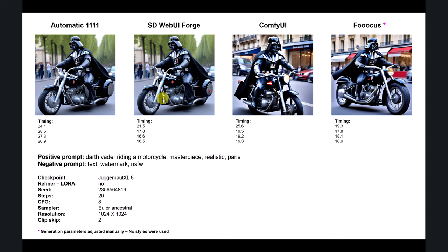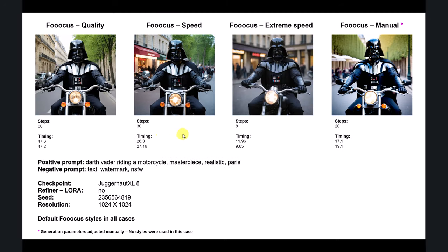The main takeaway is the fantastic timing. I'm now very happy because previously, when doing grids and many images, it was painfully slow. With Fooocus you can control quality automatically: Quality mode uses 60 steps, Speed uses 30, and Extreme Speed uses 8. You can compare those timings with Forge — they come in at similar step counts.